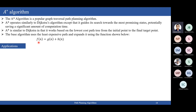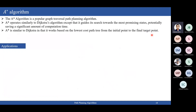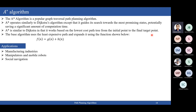In Dijkstra's algorithm we are only concerned with the start position and have no idea about the goal during search. In A*, we already have the goal position and take it into account with both costs. A* is a form of Dijkstra's: if h(n) = 0, A* becomes Dijkstra's algorithm. Applications include manufacturing industries, navigating robots from one position to another, fixed-base manipulators, mobile robots, and social navigation.